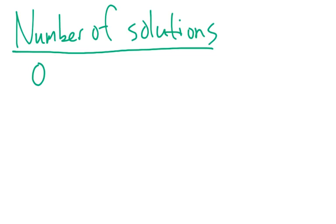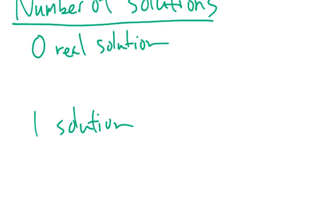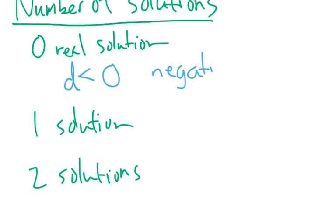And we have three options here. We're either going to have no, and then technically it's zero real solutions - they're going to be imaginary solutions. That's a conversation for another time. So, zero real solutions. We're going to have one solution. Or we're going to have two solutions. Now, the discriminant tells us whether we have that. So if our discriminant is less than zero, meaning that it is a negative number, we have zero real solutions.